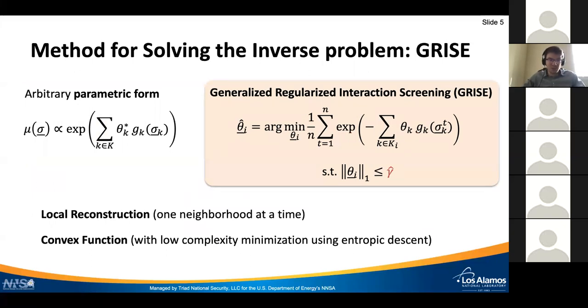How does one solve this inverse problem and learn this type of distribution? One method is called generalized GRISE, where GRISE stands for regularized interaction screening estimator. The expression is given here. Essentially, this estimator operates on the loss which is given by the empirical average of the exponential of the local energy terms taken with the opposite sign. This problem needs to be solved for estimating each neighborhood of the graph or hypergraph. It is a convex function which can be efficiently minimized using entropic descent type methods.